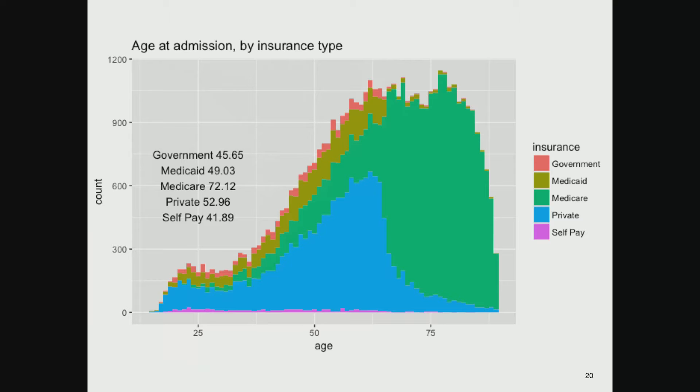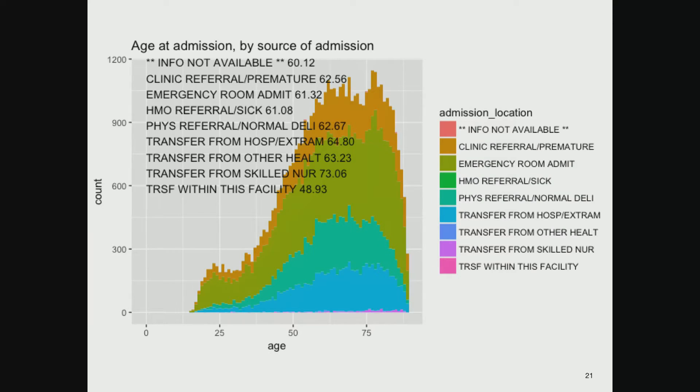Most elderly are insured by Medicare or Medicaid. Self-pay is small because it's insanely expensive. Where you came from - clinic, ER, HMO - doesn't make much difference except transfers from skilled nursing facilities are older, because if you're in skilled nursing you're probably old.